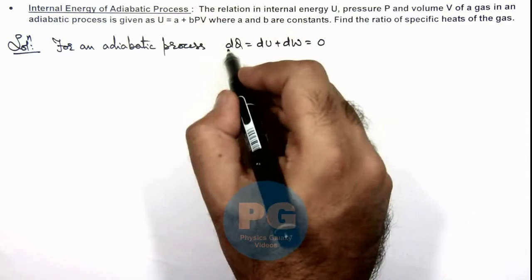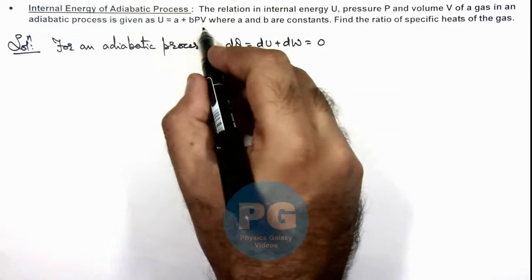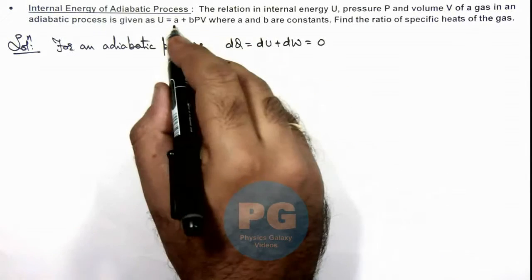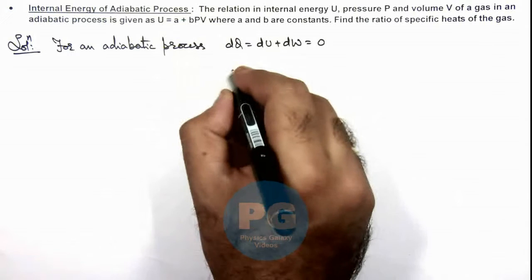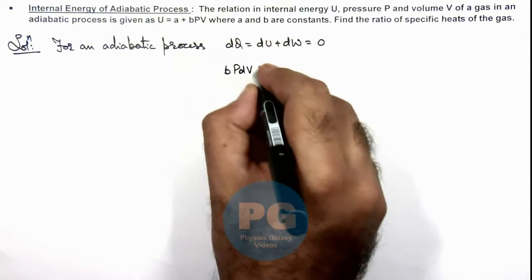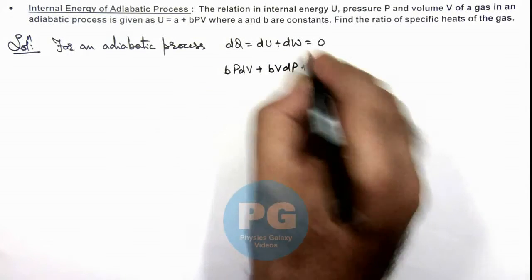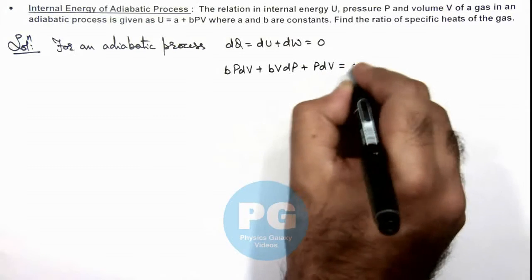So in this situation, dU we can write from this relation, which is - as aY is a constant, its derivative will be zero - so this is b times PdV plus b times VdP. Plus dW, we can write as PdV, should be equal to zero.